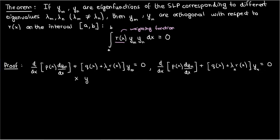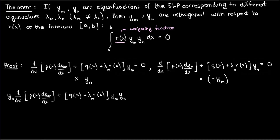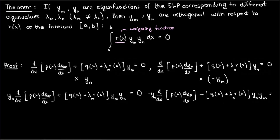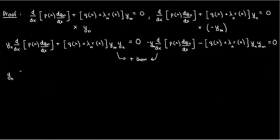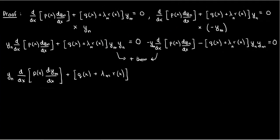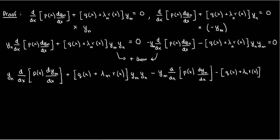Now let's multiply the first equation by y_n and the second equation by the negative of y_m, and we'll end up with two new equations. Now let's add these two new equations together to cancel out some common terms. We get y_n times the derivative of p(x) times dy_m/dx, plus q(x) plus lambda_n times r(x) times y_m times y_n, minus y_m times the derivative of p(x) times dy_n/dx, minus q(x) plus lambda_n times r(x) times y_n squared. All of that equals zero.